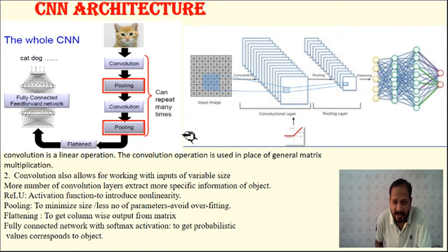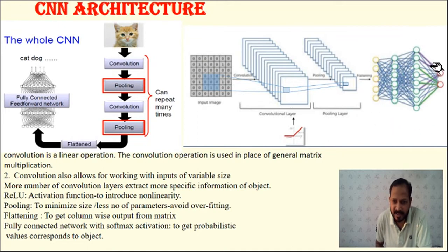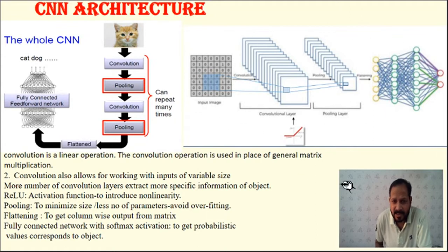As a whole, this is called the architecture of CNN. CNN does both work: it extracts features using the convolution operation, and then classifies the input into different categories or classes using the neural network — or deep neural network — having multiple hidden layers and nodes.